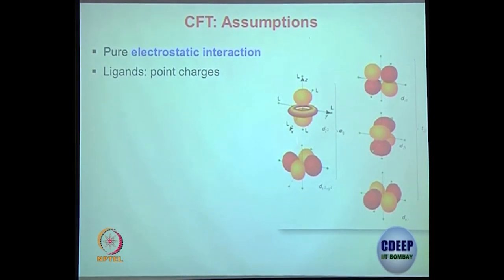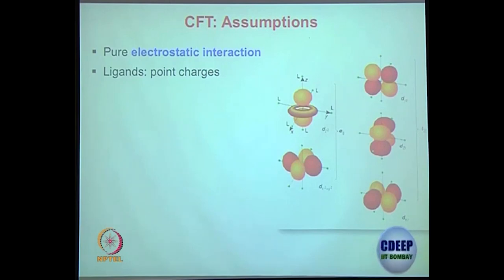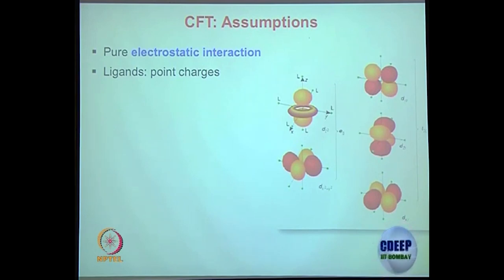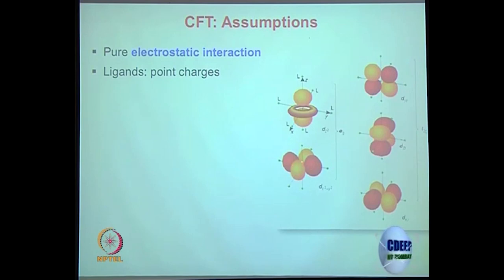This is the dz² orbital — along the z-axis. The dx²-y² orbital is along both the x and y axes. The dyz orbital lies in between the y and z axes; its lobes are between those two axes. The dxy orbital lies in between the x and y axes, not right on top of them. Similarly, dyz lies in between y and z.